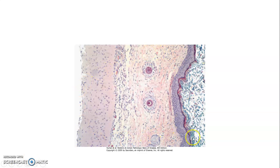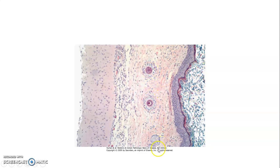This is the microphotograph of a dermoid cyst. You can see the stratified squamous lining epithelium, cerebrum, keratinous plate, adnexal structures, and cartilage.